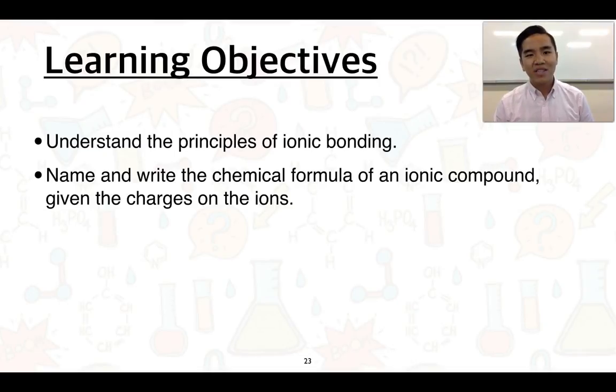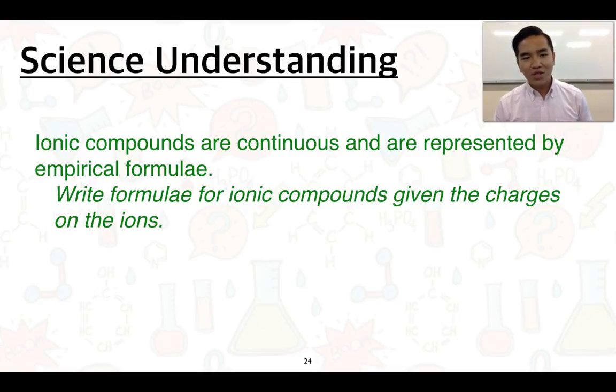In this video we're going to cover these learning objectives: understand the principles of ionic bonding and learn how to name and write the chemical formula of an ionic compound given the charges on the ions. This is directly related to this science understanding: ionic compounds are continuous and are represented by empirical formulae, and we'll talk about what that term means in a moment.